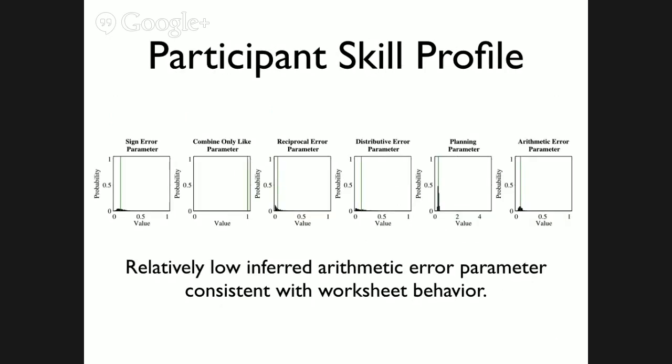Here's a skill profile for one participant along different dimensions. This person is relatively inefficient at planning and actually gave up on a number of problems, which is why that dimension is low. However, they're not getting problems wrong because of arithmetic errors — they have a relatively low inferred arithmetic error parameter. Across all participants, there was a correlation between the inferred arithmetic error parameter and their score on the arithmetic section of the worksheet — as expected. There was not a significant correlation between the arithmetic error parameter and other sections of the worksheet, suggesting we're dividing out different dimensions rather than just measuring general mathematical skill.